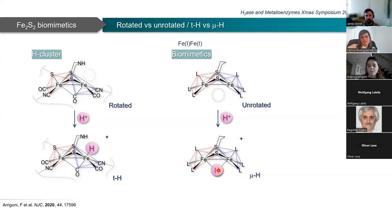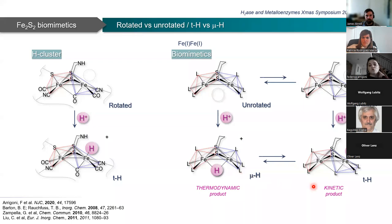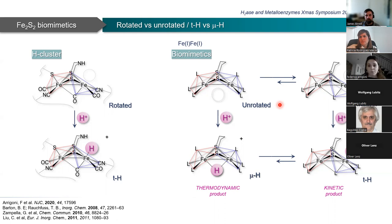By contrast, in biomimetic systems—specifically the diiron dithiolate systems competent for hydrogen production—the preferred situation is called 'unrotated,' and bridging hydrides are usually formed. Bridging hydrides are quite stable, and this can have a negative impact on efficiencies. However, these equilibria may also exist in some cases: an equilibrium between rotated and unrotated structures, and between terminal and bridging hydrides. If so, terminal hydrides can be transiently formed, and although less stable than the bridging counterpart, they are generally kinetically preferred. A promising strategy may be to shift this equilibrium towards a more H-cluster-like situation that could, at least in principle, increase efficiencies.